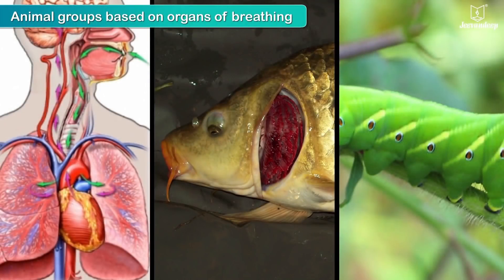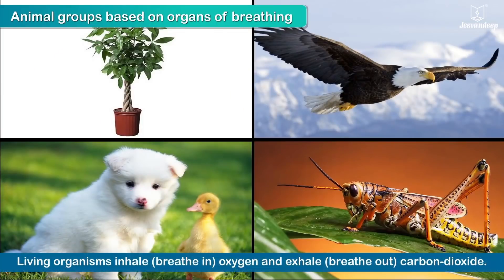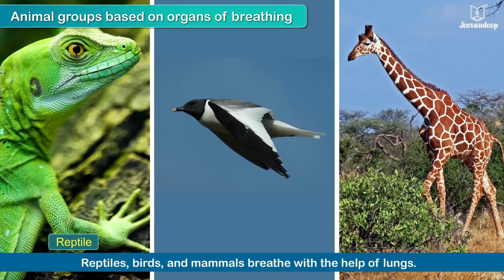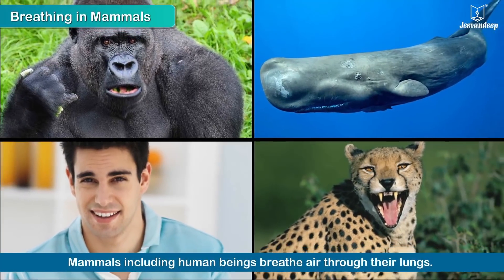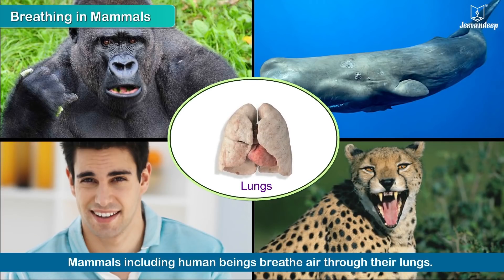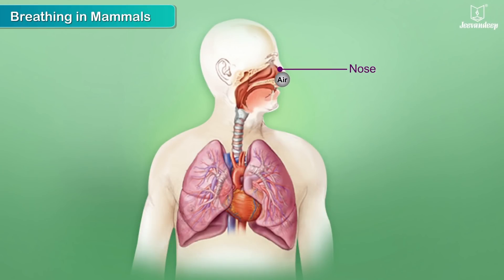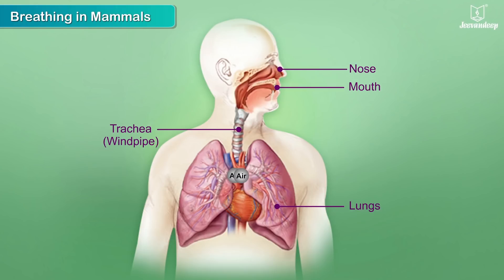Animal groups based on organs of breathing. All living organisms inhale or breathe in oxygen and exhale or breathe out carbon dioxide. Reptiles, birds and mammals breathe with the help of lungs, though they have different organs for breathing. Mammals, including human beings, breathe air through their lungs. Air is taken in through the nose and mouth and down the airway, i.e. the trachea or windpipe, into the lungs. The carbon dioxide is then thrown out of the lungs and exhaled through the mouth or nose.